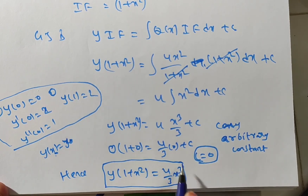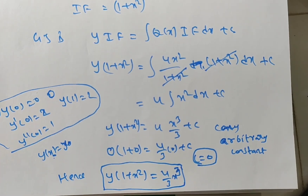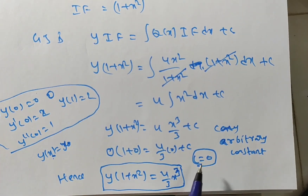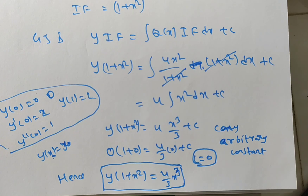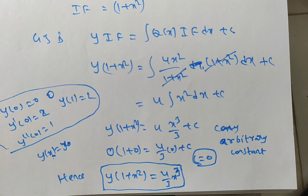Hence the solution is y(1 + x²) = (4/3)x³. This is the final solution, called the particular solution. In this case c is not present, as we replaced it using the condition at x = 0. Thank you for watching this video.